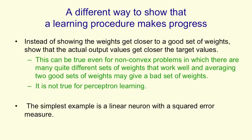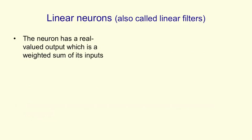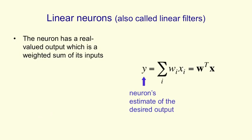The simplest example of learning in which you're making the outputs get closer to the target outputs is learning in a linear neuron with a squared error measure. Linear neurons, which are also called linear filters in electrical engineering, have a real-valued output that's simply the weighted sum of their inputs. So the output y, which is the neuron's estimate of the target value, is a sum over all inputs i of a weight vector times an input vector. We can write it in summation form or in vector notation.